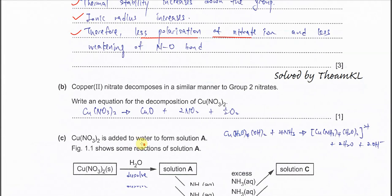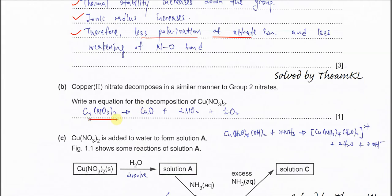Part B. This is what you learn in A-levels. Write the equation for the decomposition of copper nitrate. It is a nitrate decomposing to form an oxide, NO2 and O2. Just balance it.